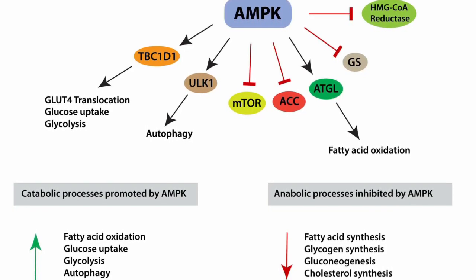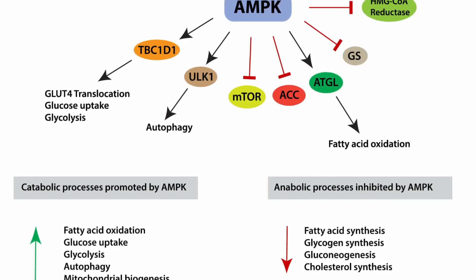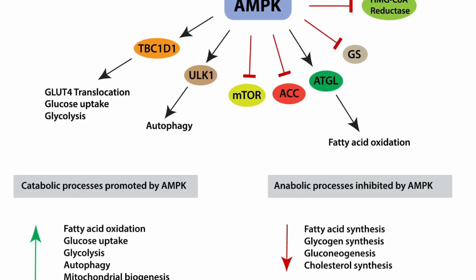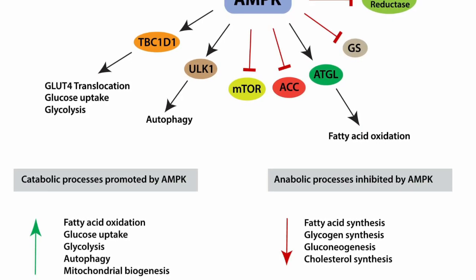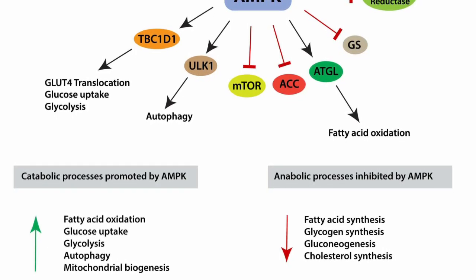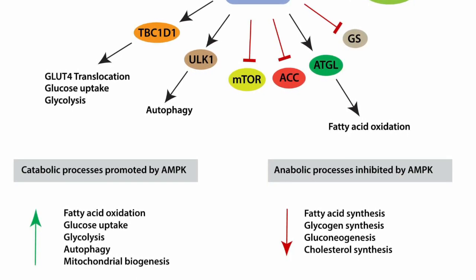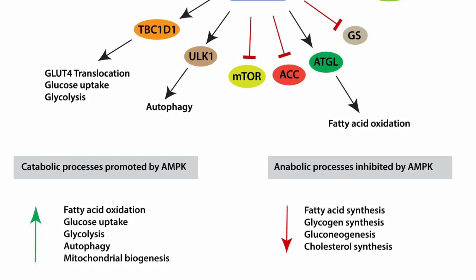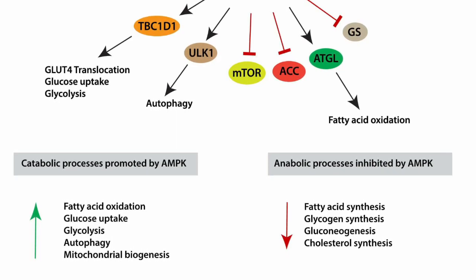Catabolism is the breakdown of complex substances to their constituent parts, whilst anabolism is about the growth of new cells and the maintenance of the body. AMPK activation has broad effects on cellular functions — it helps to maintain cellular integrity during times of energy stress, promotes mitochondrial biogenesis and regulates autophagy, the process whereby cells degrade and recycle components. AMPK exerts its effect by phosphorylating various downstream targets, including enzymes involved in energy metabolism and transcriptional regulators.